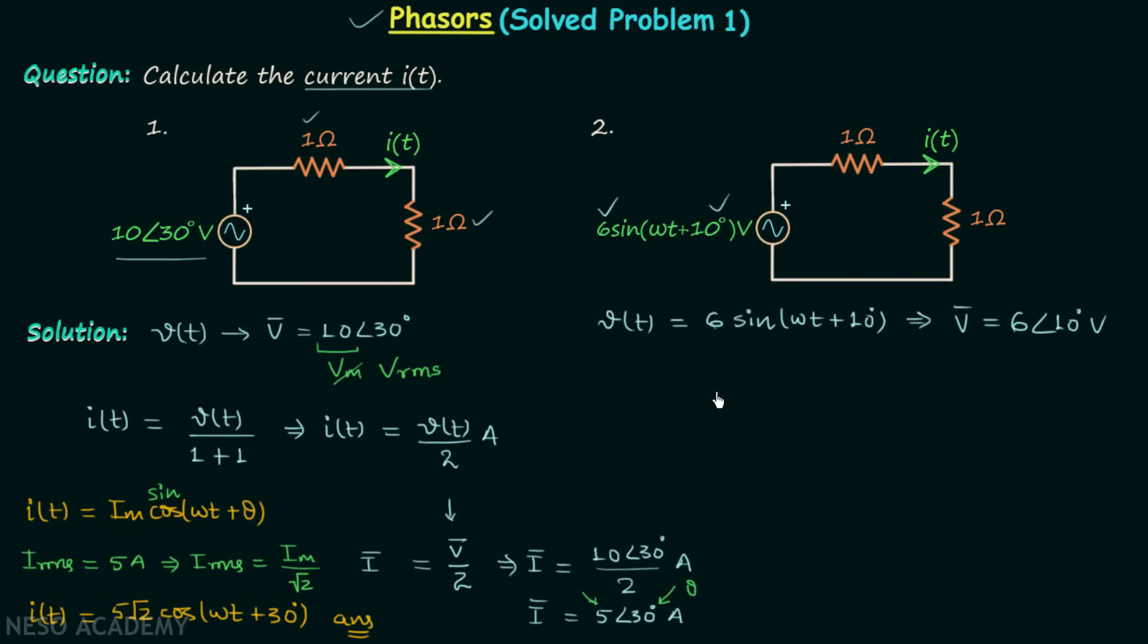Now moving on to the next step, we will find out I phasor. So I phasor will be 6 angle 10 degrees divided by 2 amperes. So I phasor is equal to 3 angle 10 degrees amperes. It is very clear that this 3 here is the maximum value of the current, because this 6 here was the maximum value of the voltage. Therefore this one here is the maximum value of the current, and this 10 degrees is the phase angle.